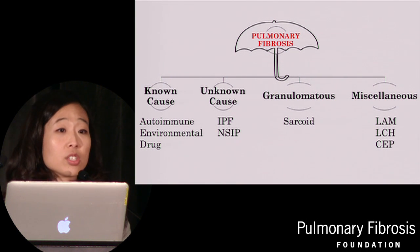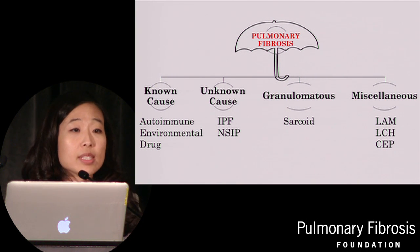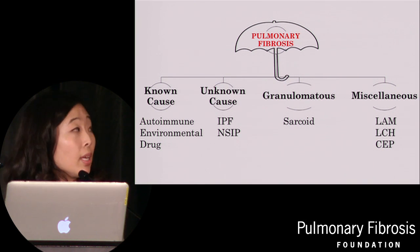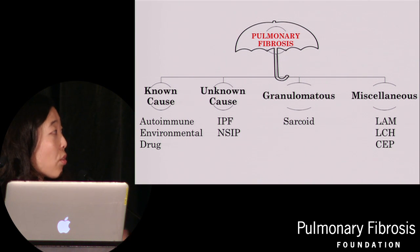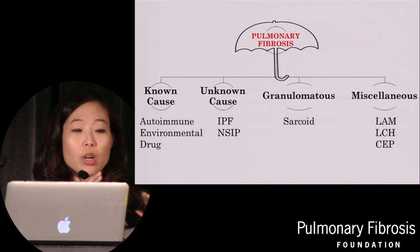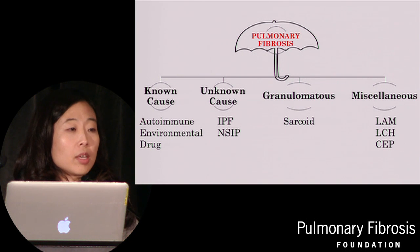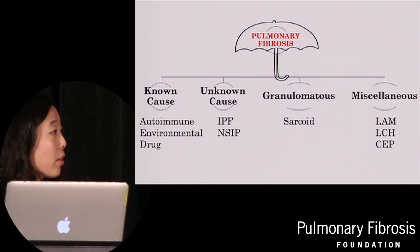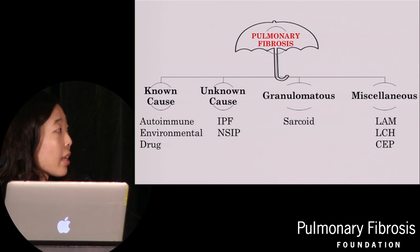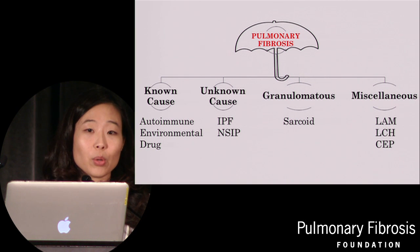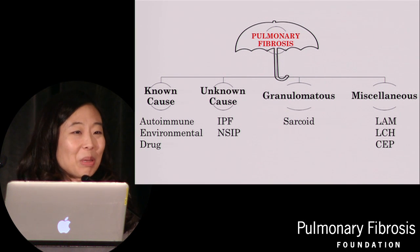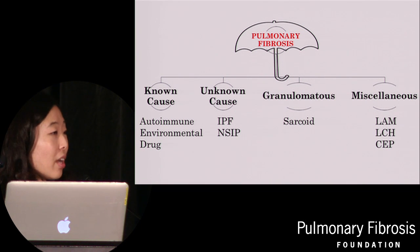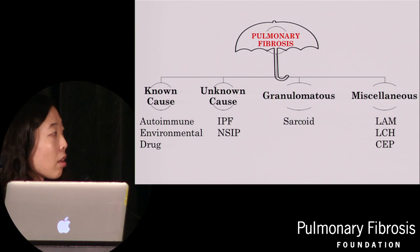Drugs, medications that patients take, and herbal supplements can all lead to drug toxicity and pulmonary fibrosis. The second major group are those attributed to an unknown cause. This is where our poster child really pops up, which is called idiopathic pulmonary fibrosis, or IPF. There are actually seven different diseases in this unknown cause category, among those nonspecific interstitial pneumonia and others — leading to our reputation as an alphabet soup group. But the most important one is IPF.